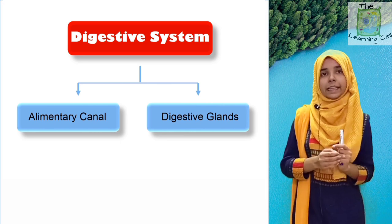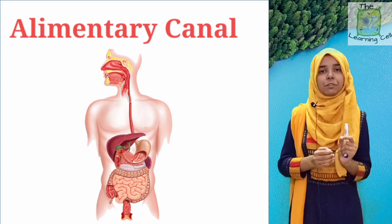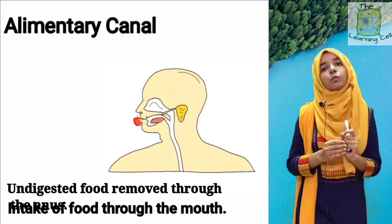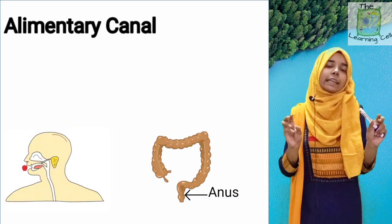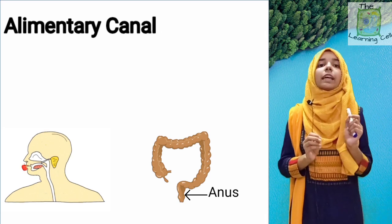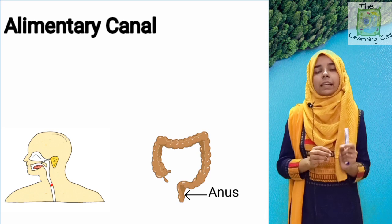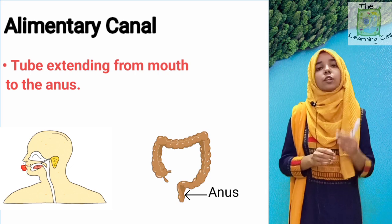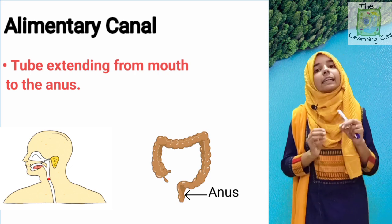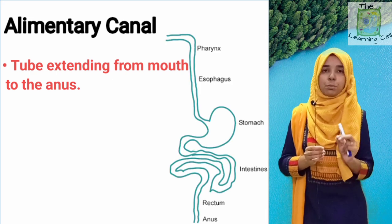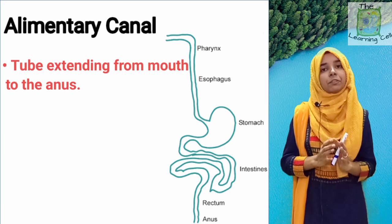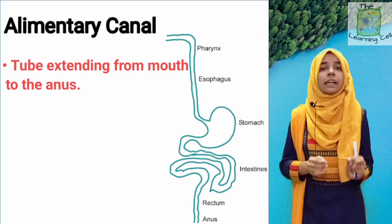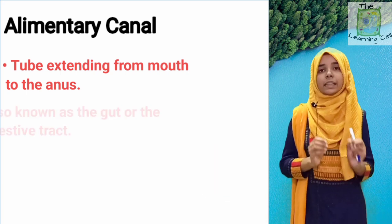Before we discuss the process of digestion in detail, let us know in brief what is an alimentary canal. Food enters through the mouth and undigested food is removed through the anus. Mouth and anus are our body's two openings which connect a hollow tube called the alimentary canal. It is basically a long tube which extends from the mouth to the anus, also known as the digestive tract and the gut.